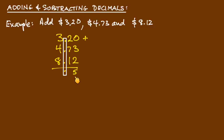0 plus 3 plus 2 equals 5. 2 plus 7 plus 1 gives me 10, that's 0 there, carry the 1. 1 and 3 is 4, and 4 is 8, and 8 is 16. And my answer is 16.05 or $16.05.